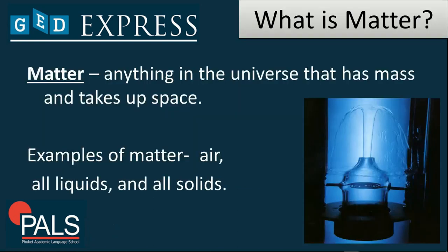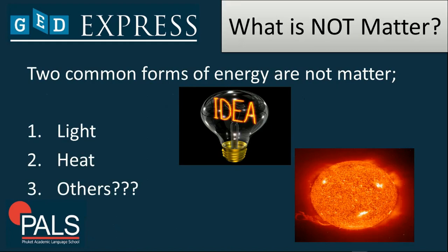Now we begin with the definition of matter. In chemistry, it is defined as anything in the universe that has mass and takes up space. Examples would be air, all liquids, and all solids, including gases. What is not matter? There are two common forms of energy that are not matter — light energy or heat energy.